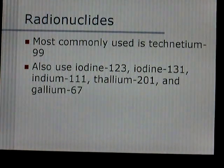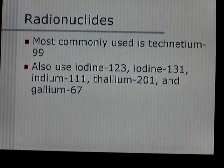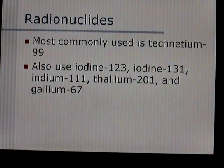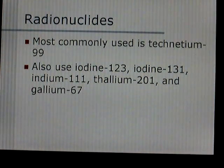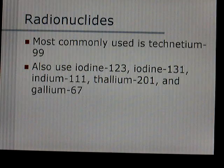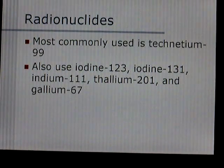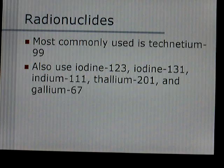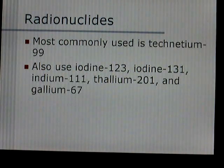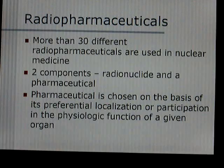The most commonly used radionuclide is technetium-99. You also see iodine-123 and iodine-131, indium-111, thallium-201, and gallium-67 — those are the most common radionuclides used in nuclear medicine.